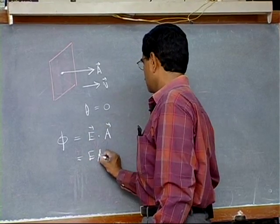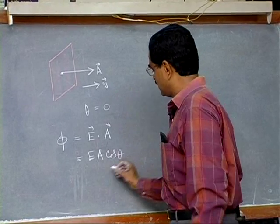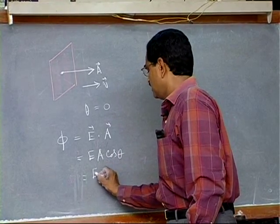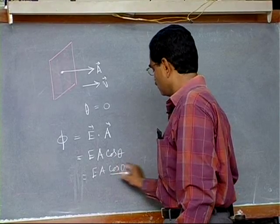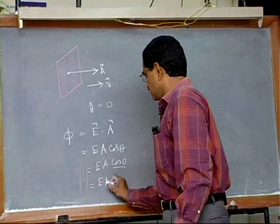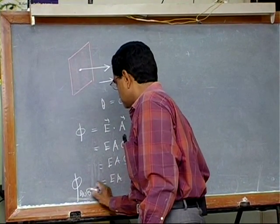E A cos theta. In the cos 0, E A into cos 0. Cos 0 is 1, that is equal to E A. This is maximum, right?